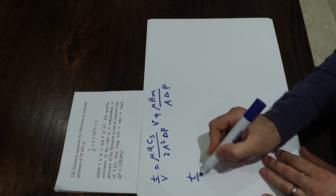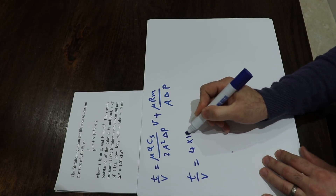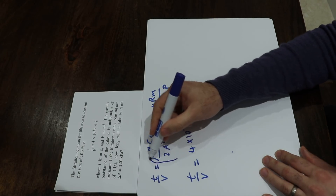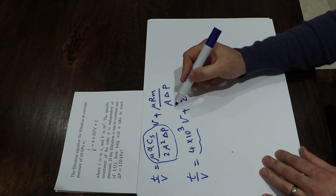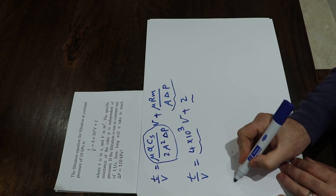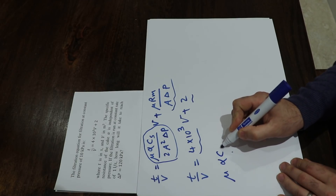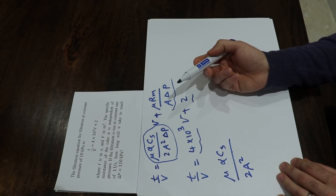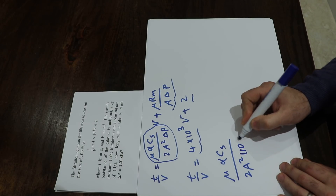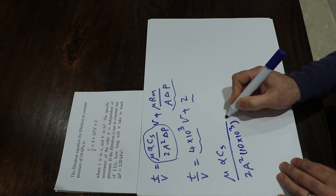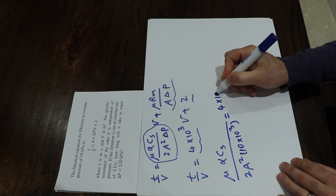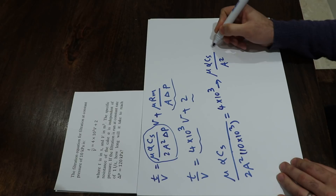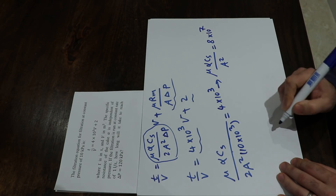The equation given in the question is t divided by V equal to 4 times 10 to the power of 3 times V plus 2. Comparing this to the general equation, the first coefficient gives: mu alpha cs divided by 2 a², with delta P equal to 10 kilopascal, equals 4 times 10 to the power of 3. From this you can conclude that mu alpha cs divided by a² equals 8 times 10 to the power of 7.